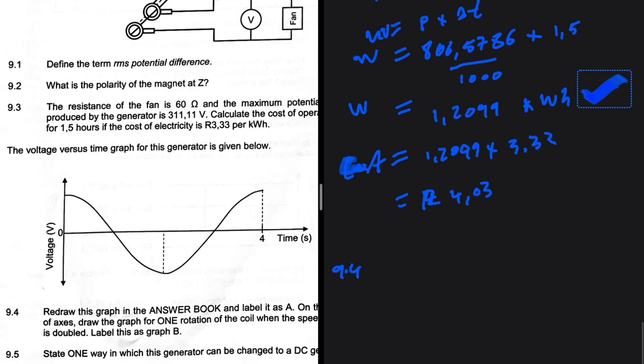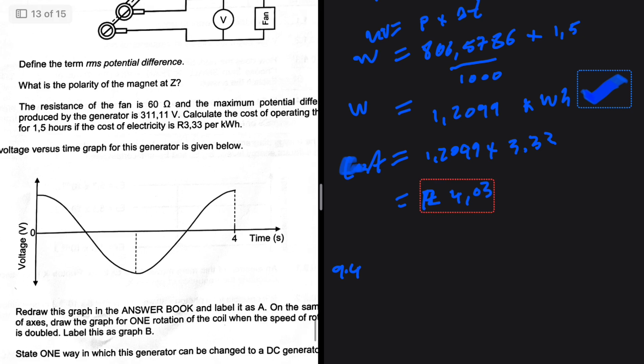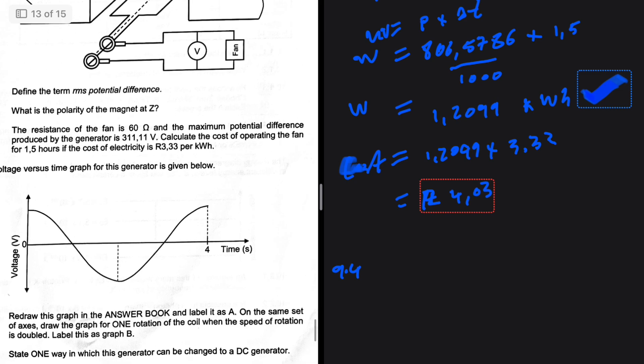Question 9.4: The potential versus time graph for this generator is given below. Redraw this graph in the answer book and label it as A. On the same set of axes, draw the graph of one rotation of the coil when the speed of rotation is doubled. Doubling the speed of rotation halves the period. Initially, it takes four seconds to complete one cycle. When we double the speed of rotation, it will take two seconds.